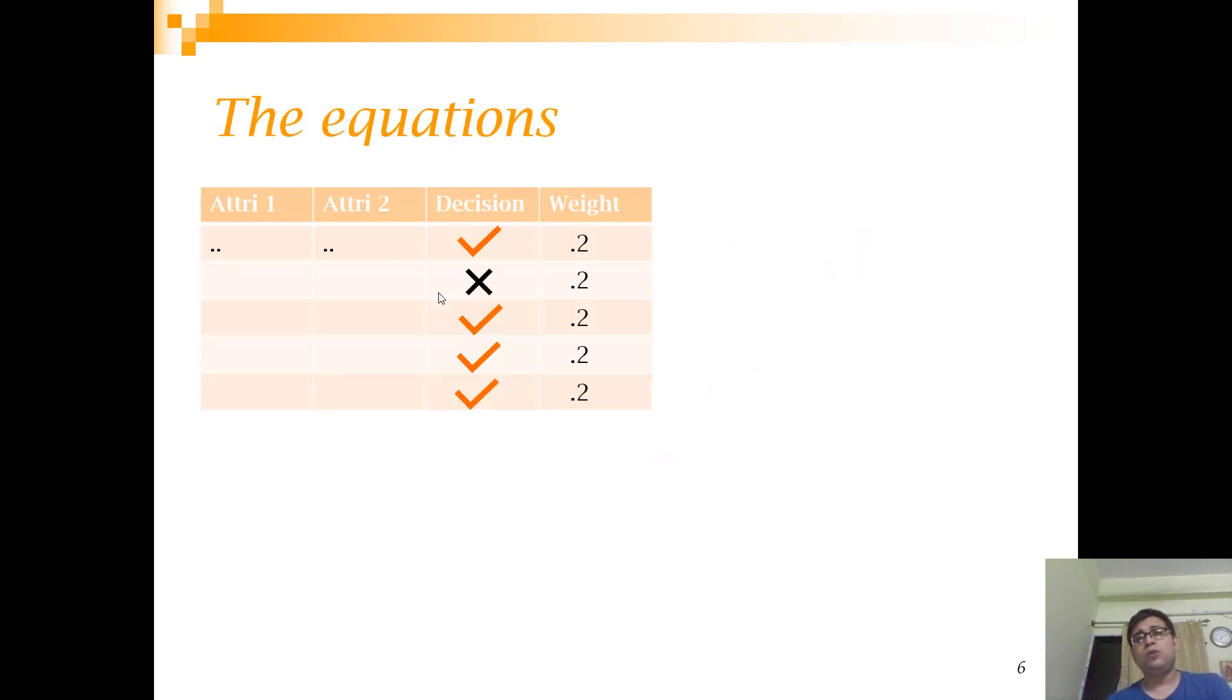Now let's look at the math. Here is a dataset which has two attributes and the class. This column 'decision' just tells whether the stump's prediction was correct or not. So four cases - first row, third row, fourth row, fifth row were correct, whereas the second row was not correct. Initially all rows will have equal weight, and if I have M observations then the weight for each row will be 1 by M.